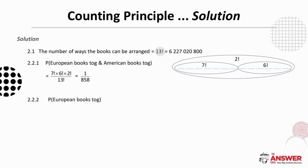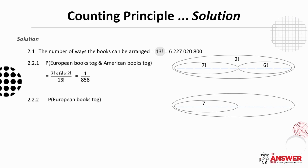Next, the probability that only the European books are together. We place the 13 slots and group 7 together to represent the European books. They can be arranged 7 factorial times amongst themselves. The group of European books holds 1 place, making 6 plus 1 equals 7 places that can be arranged 7 factorial times. The probability is 7 factorial times 7 factorial over 13 factorial, which equals 7 over 1716.